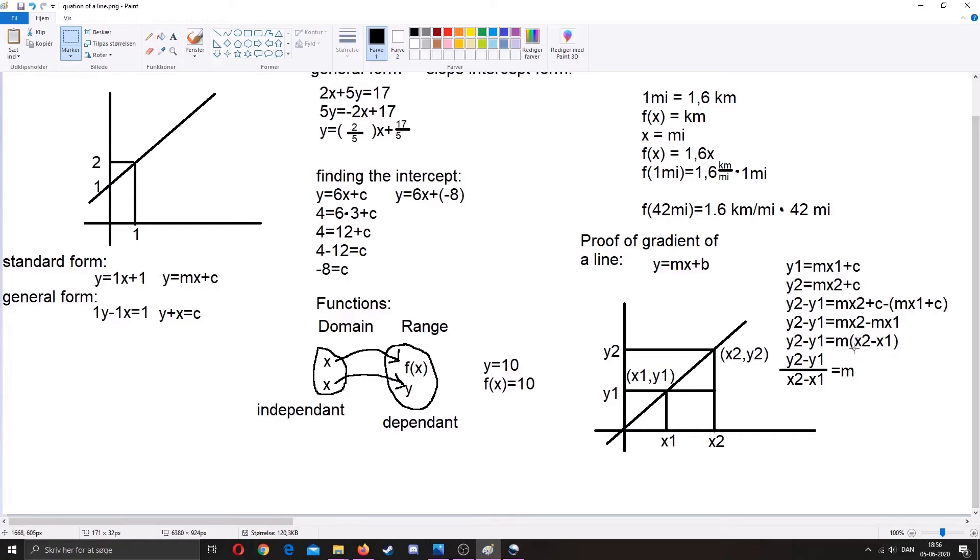Then we can factorize this. So, since there's two m's, those are the common factors. So, we can put the m outside the bracket. So, we end up with y2 minus y1 equals m bracket x2 minus x1 bracket. And then we can simply use algebra to rearrange that into y2 minus y1 divided by x2 minus x1 is equal to the slope of a line.